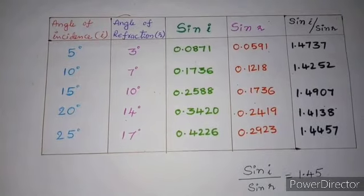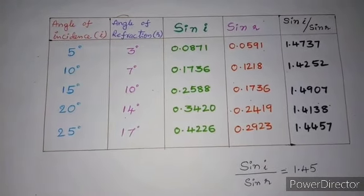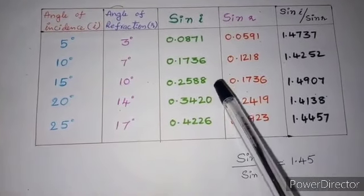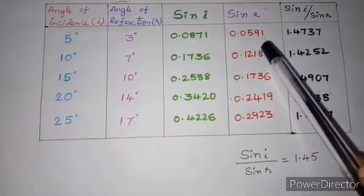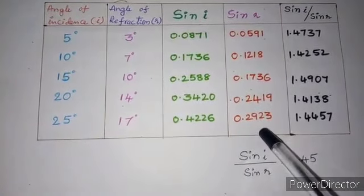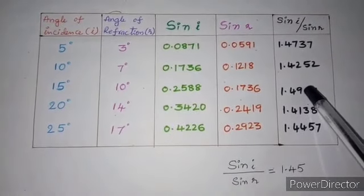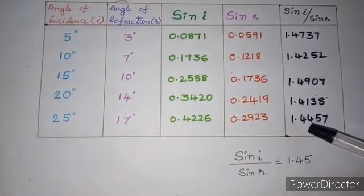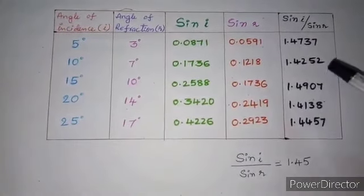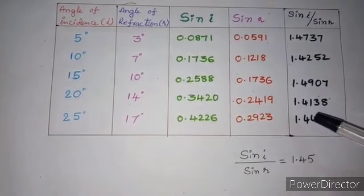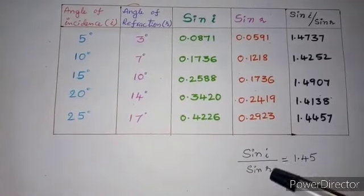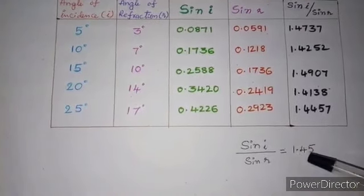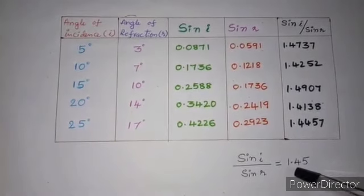We can tabulate the angle i and angle r values and find the ratio sin i / sin r. In this table, we calculated the sin values of all angles of incidence and the corresponding sin values of all angles of refraction. In the last column, we calculated the ratio sin i / sin r. All these values are almost equal to 1.4, and taking the average gives 1.45. This constant value denotes the refractive index of the glass disk material.